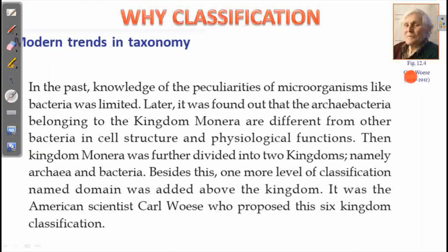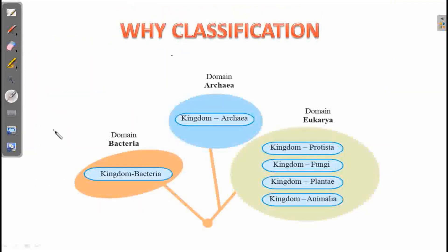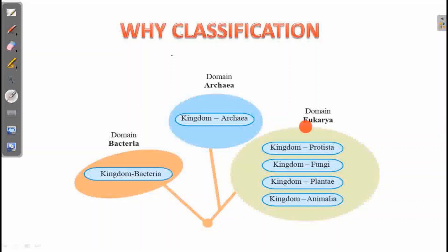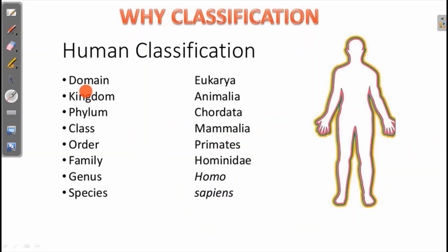The six kingdom classification was proposed by Carl Woese. The six kingdoms are: Kingdom Bacteria, Kingdom Archaea, Kingdom Protista, Kingdom Fungi, Kingdom Plantae, and Kingdom Animalia. These are grouped under three domains: Domain Bacteria, Domain Archaea, and Domain Eukarya for the remaining eukaryotes.